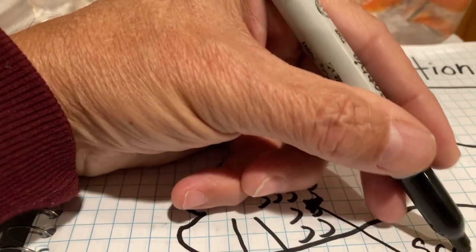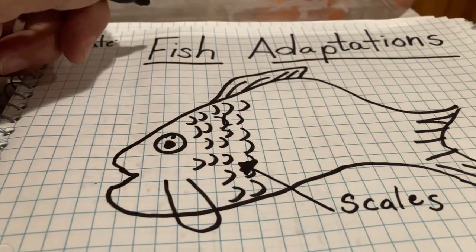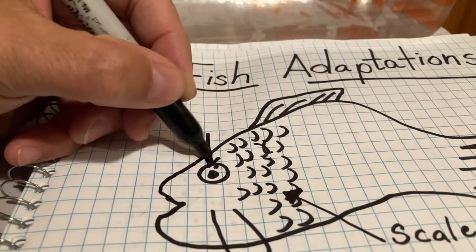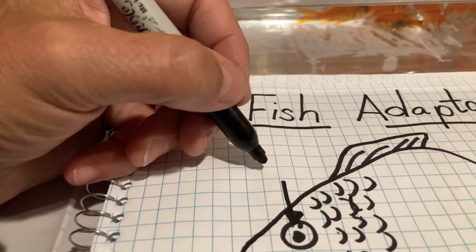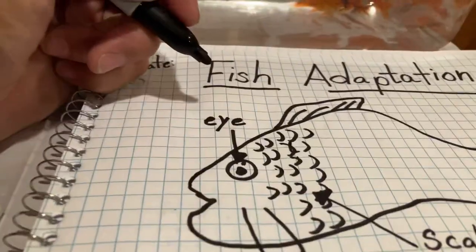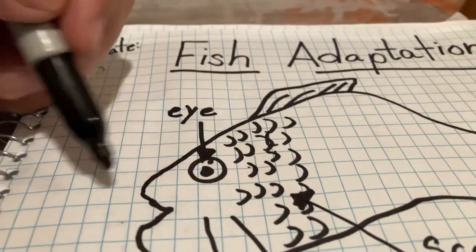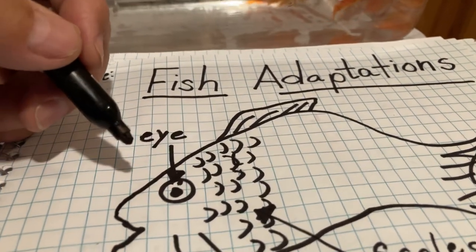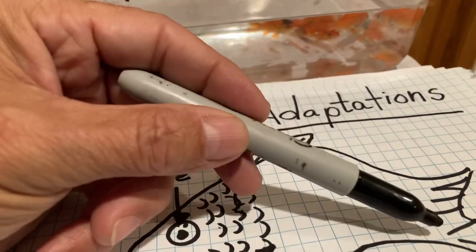Scales are worth one point. Now the eyes — on this fish, the eyes are on the sides, and that means they are ready to hide, staying away from predators. I'll show you a picture of a fish I caught and let go that has its eyes in front because it's a predator fish. So this one's eyes are on the side — it is prey, ready to hide. So we have the eyes and the scales labeled.